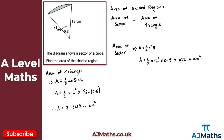For the area of the shaded region, that's the area of the sector minus the area of the triangle: 102.4 minus 91.8215. Giving this to one decimal place, we get 10.6 centimetres squared — and that's the solution to the very last question, question three.